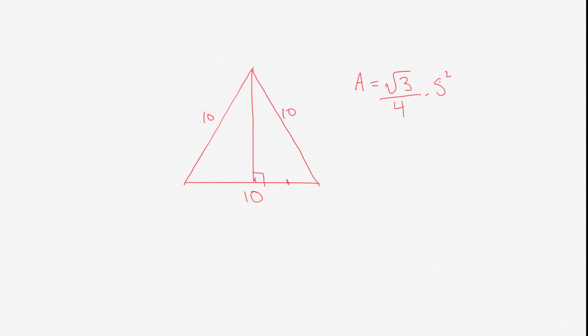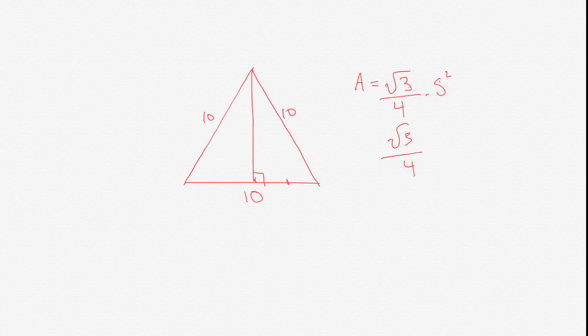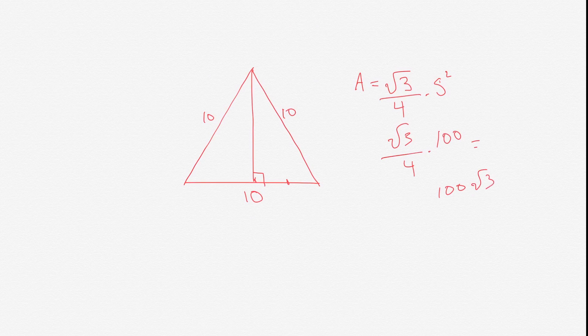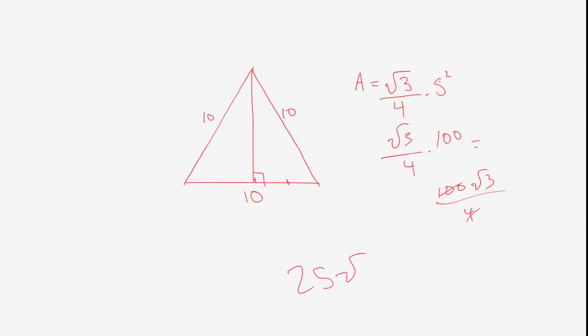Each side is equal. So here the side is ten, so it would be the square root of three divided by four times ten squared, which would be a hundred. And then that would equal a hundred times the square root of three divided by four. That simplifies into twenty-five times the square root of three.